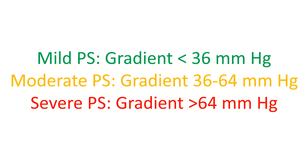Severe pulmonary stenosis is defined as peak jet velocity more than 4 m/s and peak gradient more than 64 mmHg. Moderate pulmonary stenosis has a peak jet velocity between 3 to 4 m/s and peak gradient between 36 to 64 mmHg.